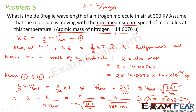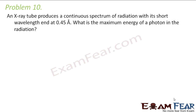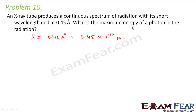So 0.028 nanometers is the de Broglie wavelength of a nitrogen molecule. Now let us look at problem 10. An X-ray tube produces a continuous spectrum of radiation with its short wavelength end at 0.45 angstrom, which is 0.45 × 10⁻¹⁰ meters. What is the maximum energy of a photon in the radiation? The wavelength of the radiation is given.